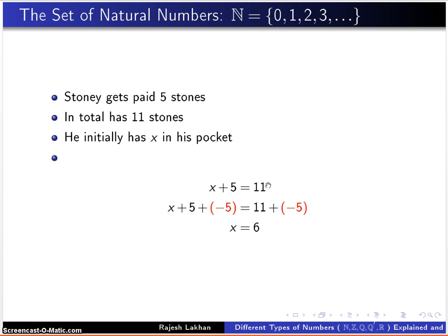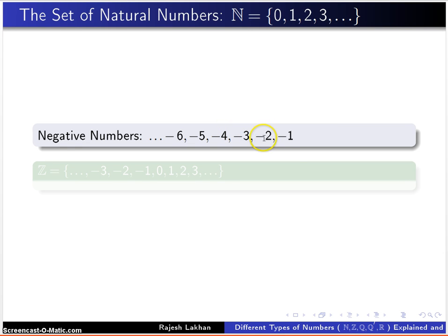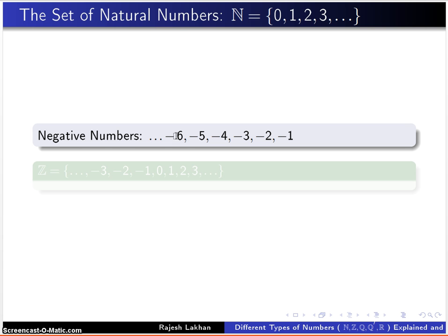You might think this is very easy to solve. We just subtract 5 from both sides and we get x equals 6. That's correct and that's excellent. But hidden here is the number negative 5, but we do not have any negative numbers. All we have are the natural numbers which are all positive numbers. Therefore, mathematicians invented negative numbers, so we have negative 1, negative 2, negative 3, and so on and so forth. Now we grouped together the negative numbers with the positive numbers and we call this set the set of integers, and it's denoted by this fancy letter Z.